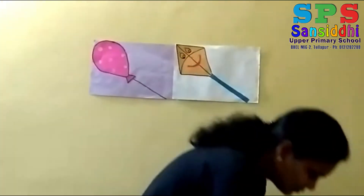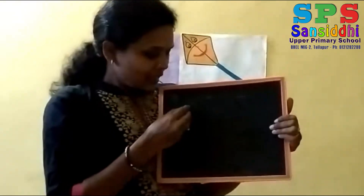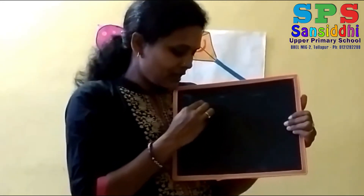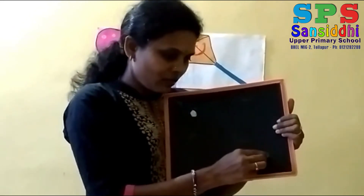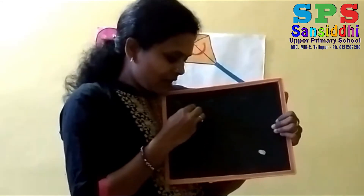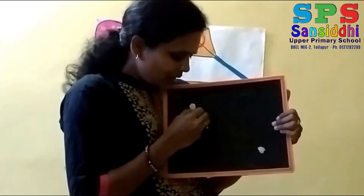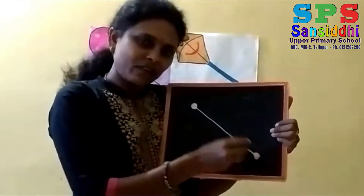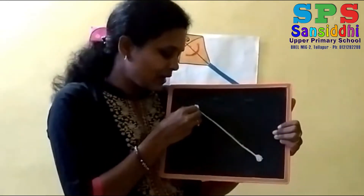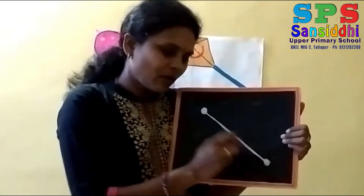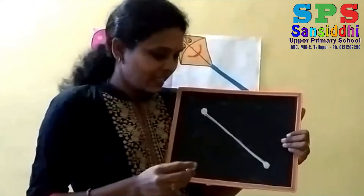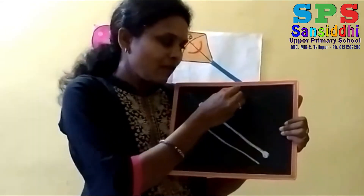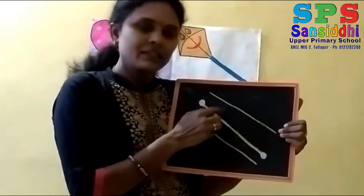Did you understand what is left slanting line? Today we are going to learn how to write left slanting line. I will keep a dot on the right side — up right side, then down. From right to down left. It is called left slanting line. From up to down left — it is called left slanting line.